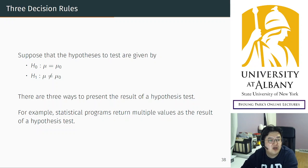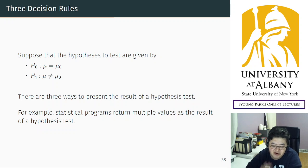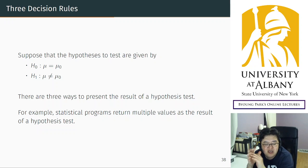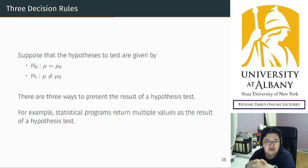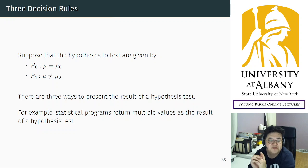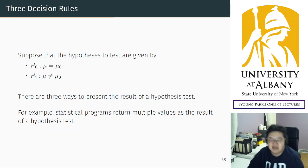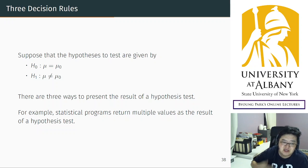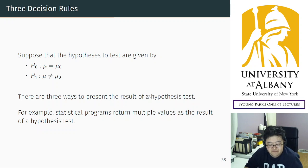The last topic we are going to consider is about three decision rules. So far, we learned the conceptual framework and how to apply the method algebraically to a specific numerical example. Now I will give you three different ways to present the results. There are three different ways used in practice. For example, when you run hypothesis testing on a statistical program, it returns many numbers in a results table, and you will find a lot of numbers because there are three different ways to present the result.